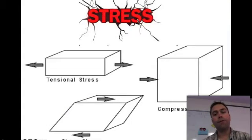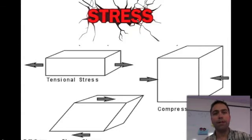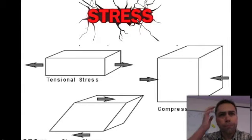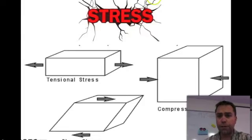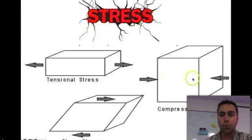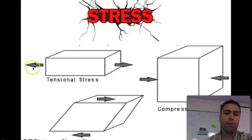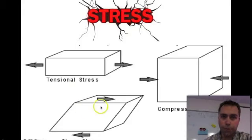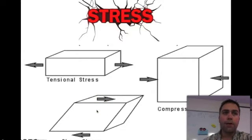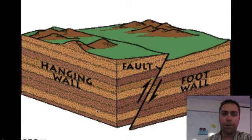Let's start by talking about stress, or forces applied to rock. There are three types we want to discuss. First is compression — forces squeezing the rock together. Tension is when rock is pulled apart in opposite directions. And shearing is when rock is pushed in opposite horizontal directions. Stress results in movement along faults.